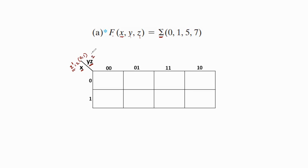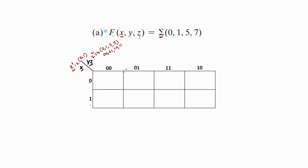Similarly, for yz, since there are two variables, we need 2² = 4 combinations, which means values from 0 to 3 written in binary using two bits: 00, 01, 11, 10. We write 11 before 10 because the K-map follows the unit distance code — only one bit changes between adjacent cells. We now assign these binary values for x and yz on the K-map.